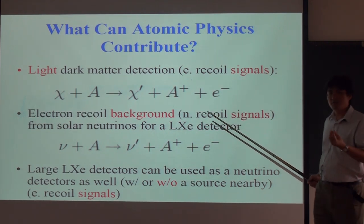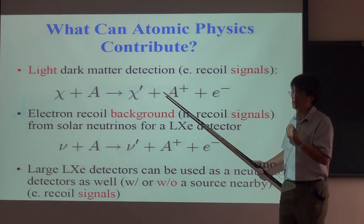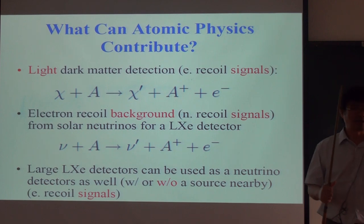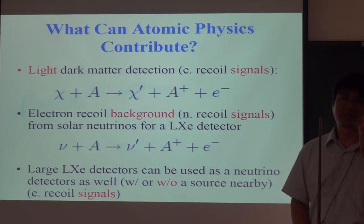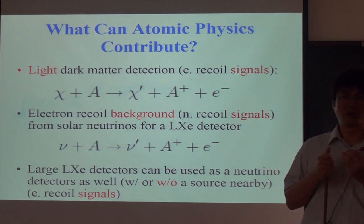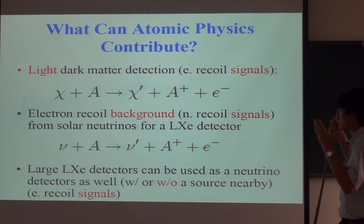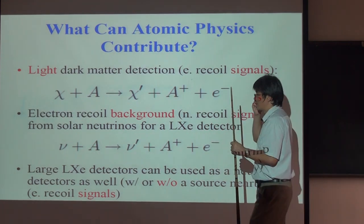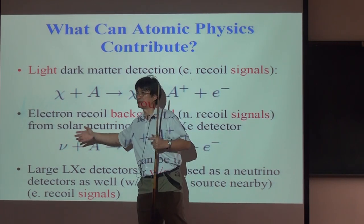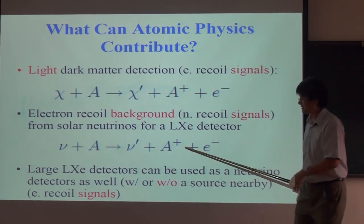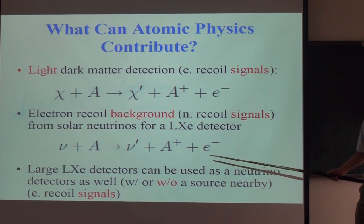You can contribute to the signal by having a dark matter particle called chi. It comes in interacting with an atom and knock out an electron. So this is looking at electron recoil. Or it could contribute to the background by having a neutrino come in and knock out an electron. Because both dark matter and neutrino interact with the atom very weakly. So you basically don't see anything come in. And what you see is an electron that goes out. So that is what you want to constrain.